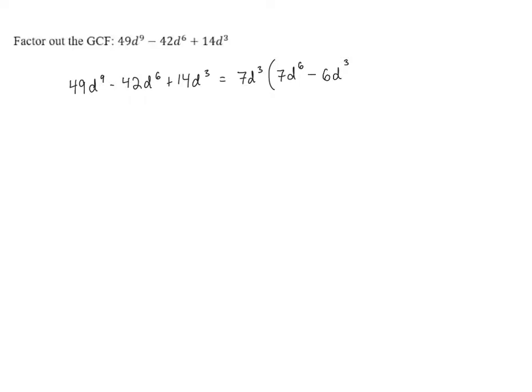Now for the last term, we have to take 14d cubed and pull out a 7d cubed, but we just get 2, because 14d cubed divided by 7d cubed gives us 2. And that finishes the leftovers, which gives us our final answer: 7d cubed times the quantity 7d to the 6th minus 6d cubed plus 2.